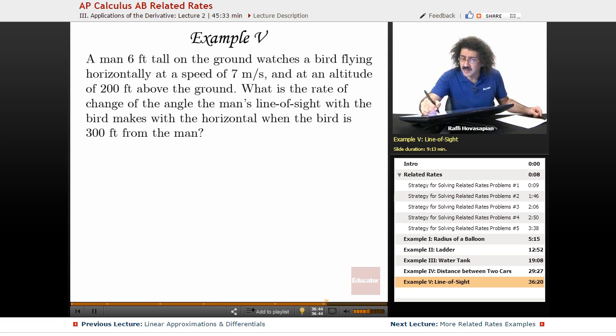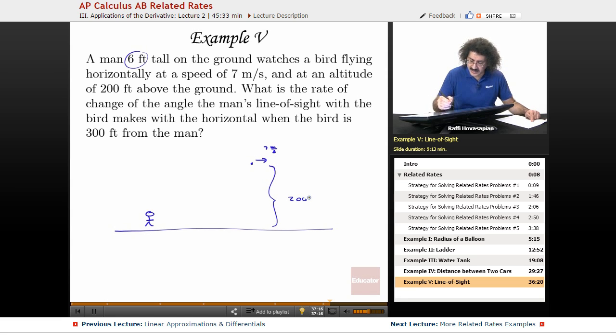Let's go ahead and draw this out. Here's the ground and I have a man who is six feet tall and he's watching a bird flying horizontally. The bird is flying at seven meters per second. The bird is over here and his altitude is 200 feet off the ground and this guy is six feet tall.